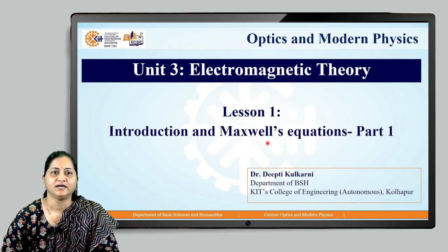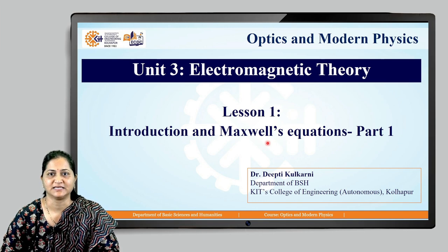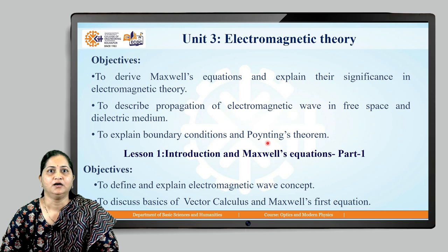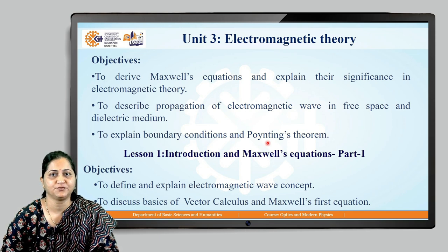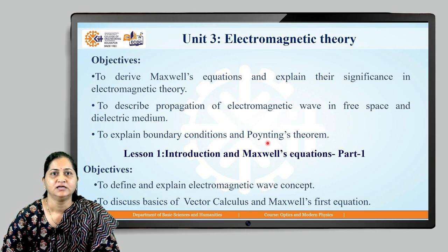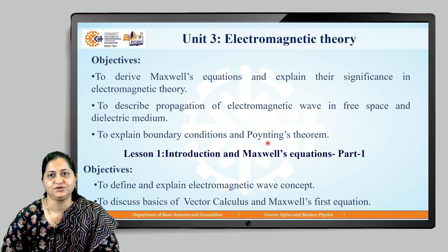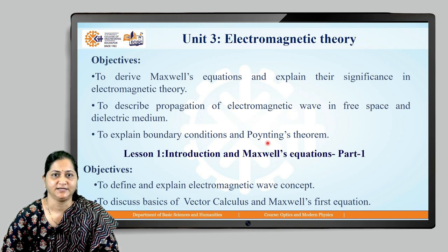We know that there are four Maxwell's equations. In this unit, we will see some introductory parts and the first Maxwell's equation. The objectives of this unit are to derive Maxwell's equations, explain their significance, describe propagation of electromagnetic waves in free space and in a dielectric medium, and explain boundary conditions and Poynting's theorem.